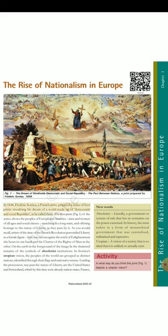In 1848, Frédéric Saurieux, a French artist, prepared a series of four prints visualizing his dream of a world made up of democratic and social republics, as he called them. The first print, Fig. 1 of the series, shows the peoples of Europe and America, men and women of all ages and social classes, marching in a long train and offering homage to the Statue of Liberty as they pass by it. Artists of the time of the French Revolution personified Liberty as a female figure — here you can recognize the torch of enlightenment she bears in one hand and the charter of the rights of man in the other.